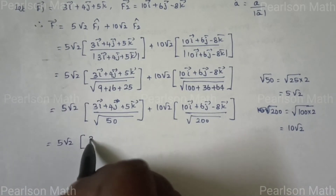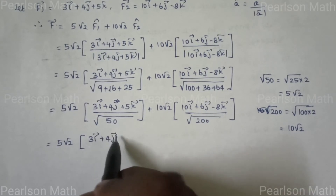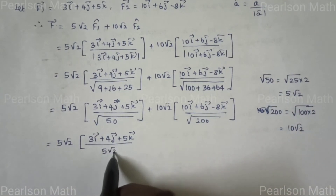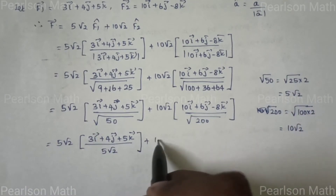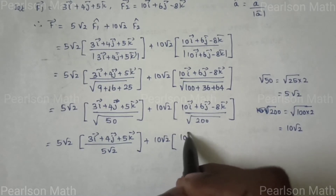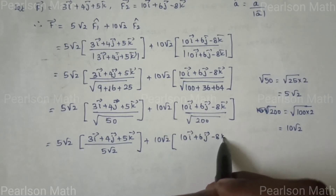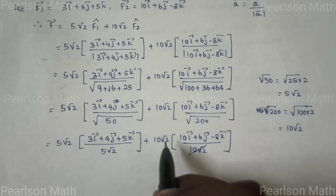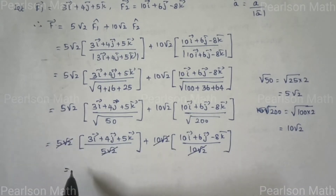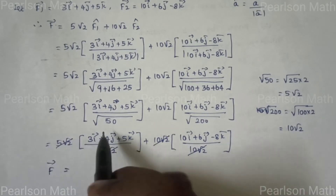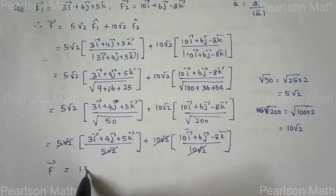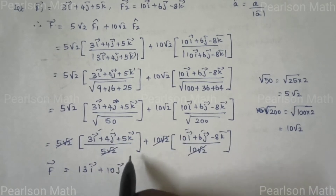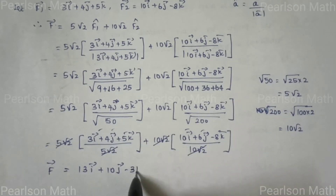After cancellation, 5√2 / √50 = 1 and 10√2 / √200 = 1. So F vector = (3i + 4j + 5k) + (10i + 6j - 8k) = 13i + 10j - 3k.